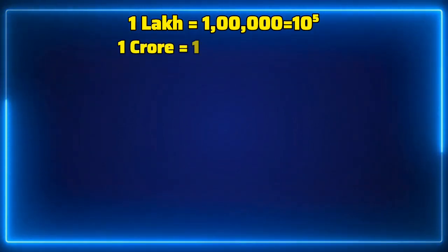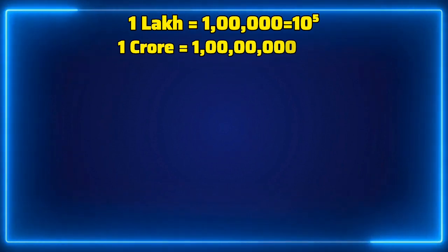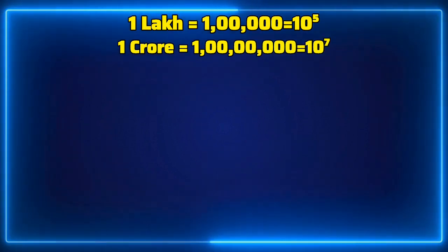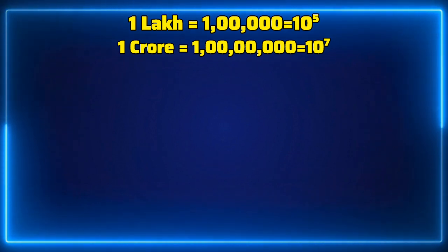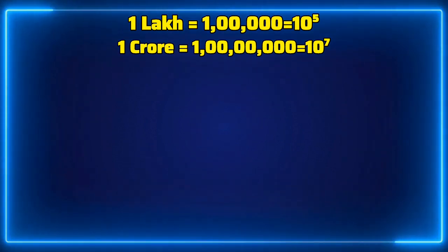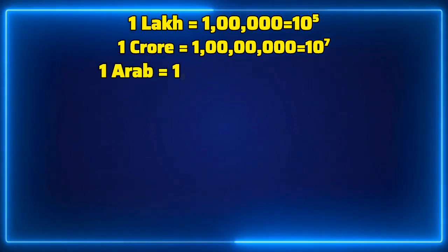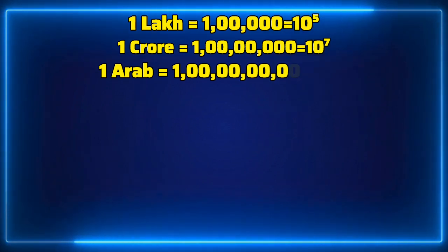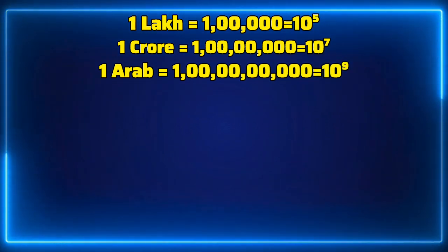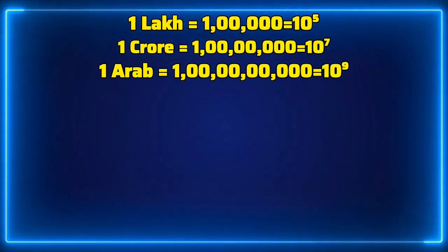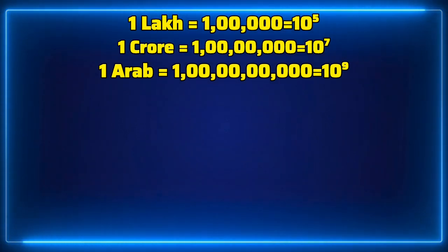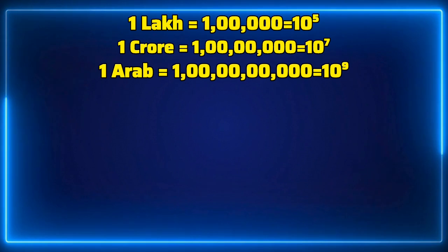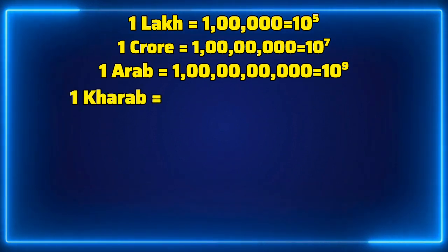One crore is two more zeros than lakh — 5 plus 2 gives seven zeros, that is 10 to the power 7. Then one Arab is two more zeros: 7 plus 2 gives nine zeros, that is 10 to the power 9.